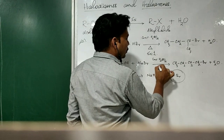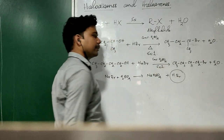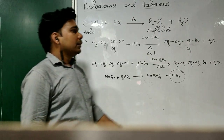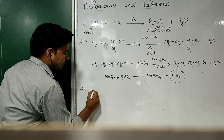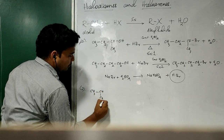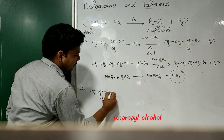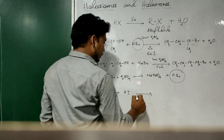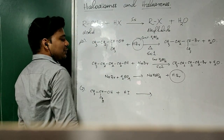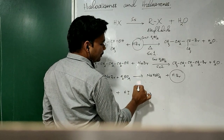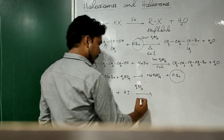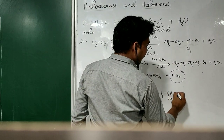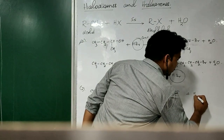This primary alcohol undergoes reaction through an SN2 mechanism. Similarly, if I need to prepare an alkyl iodide, for example taking isopropyl alcohol as the starting material, it will be treated with HI. A little amount of H3PO4 is used as catalyst. The corresponding product will be isopropyl iodide along with the formation of a water molecule.